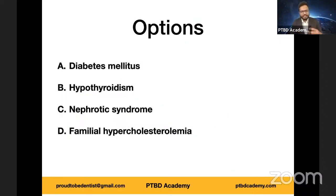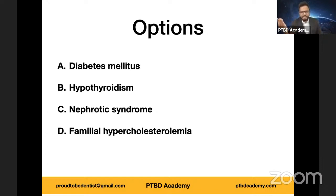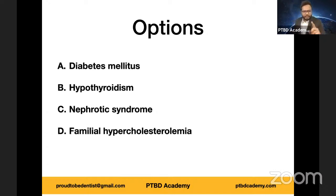Given the context and lipid profile, which diagnosis mostly suits the condition? The options are: (A) Diabetes mellitus, (B) Hypothyroidism, (C) Nephrotic syndrome, and (D) Familial hypercholesterolemia. Which one do you think is the more appropriate diagnosis?